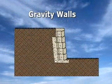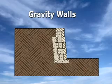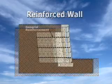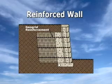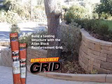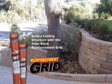Walls that rely on their own weight and setback are called gravity walls. Under certain conditions, a gravity wall is not enough and additional reinforcement will be needed. These walls are called reinforced walls.